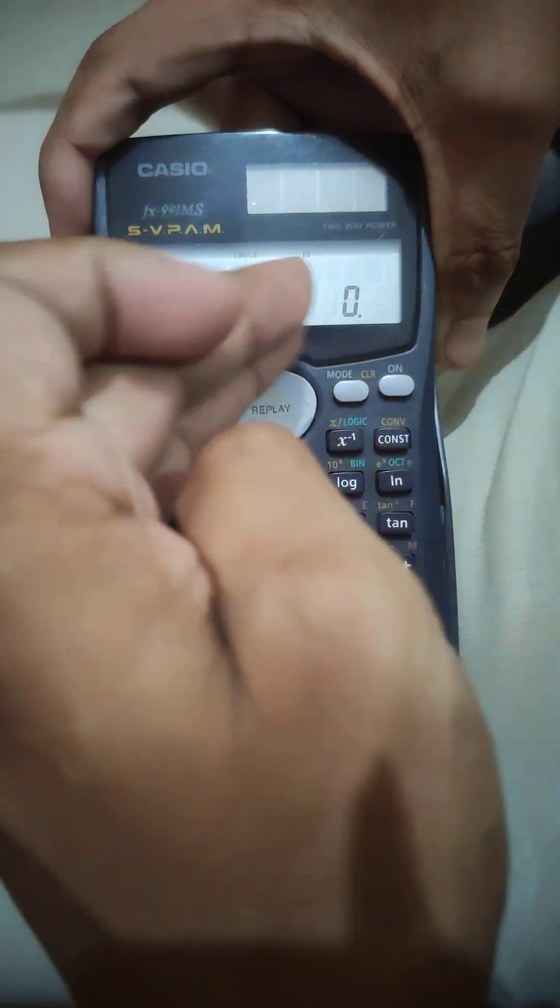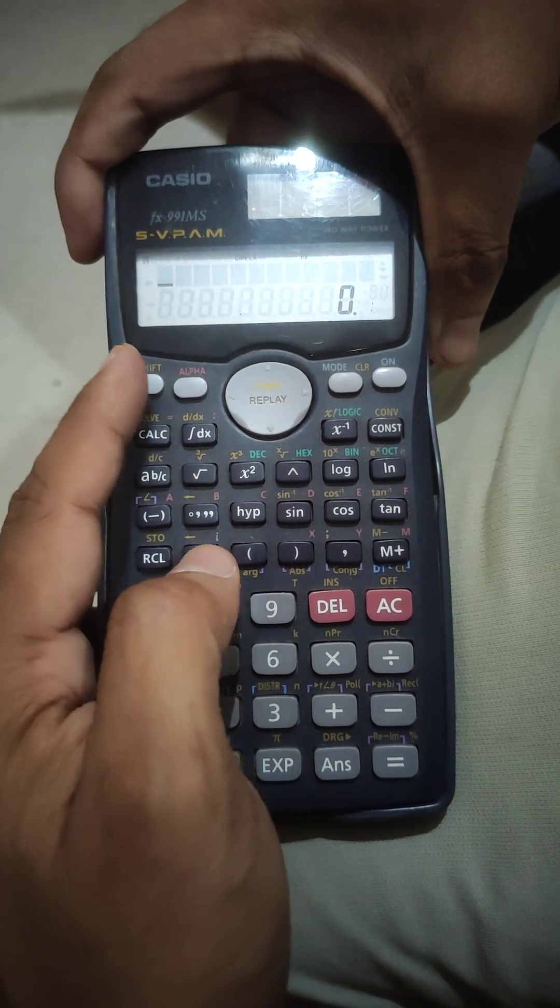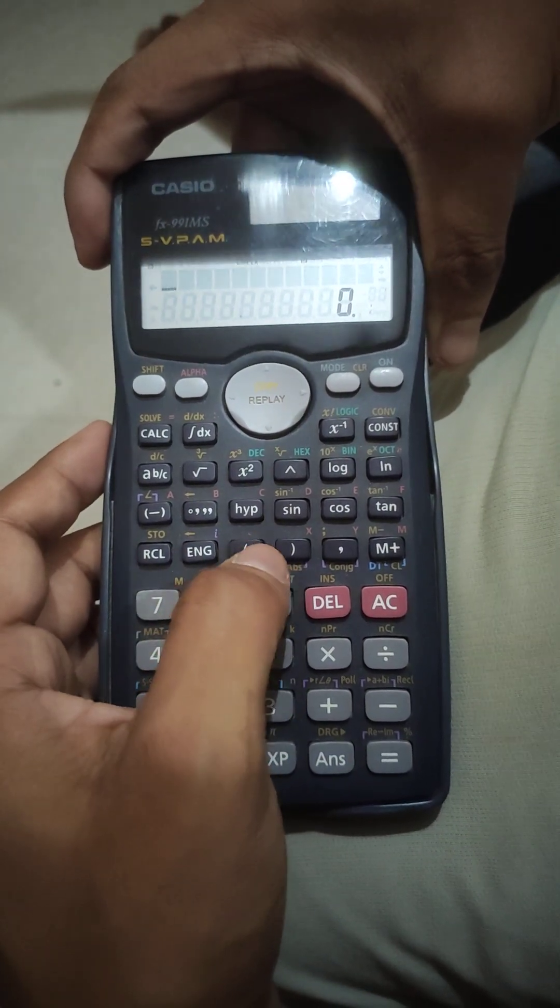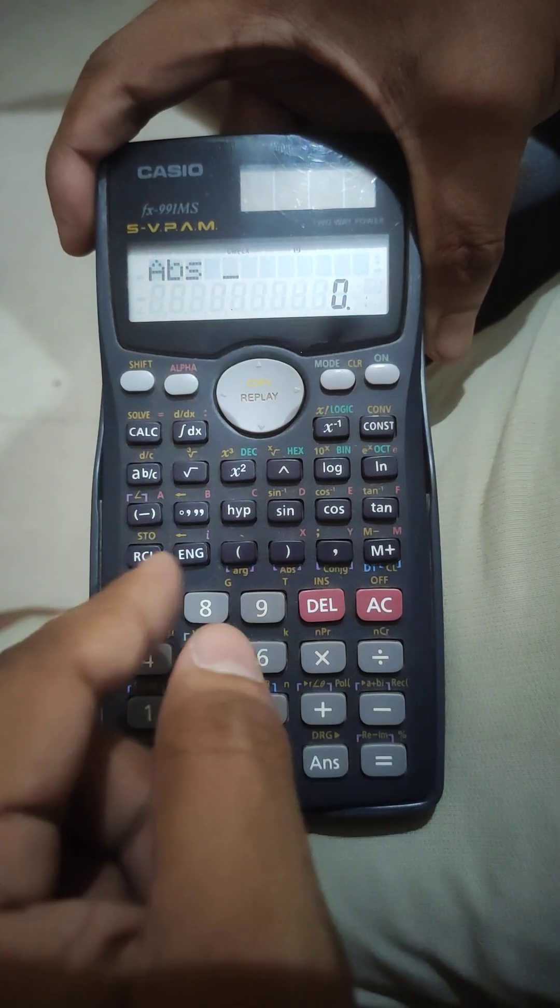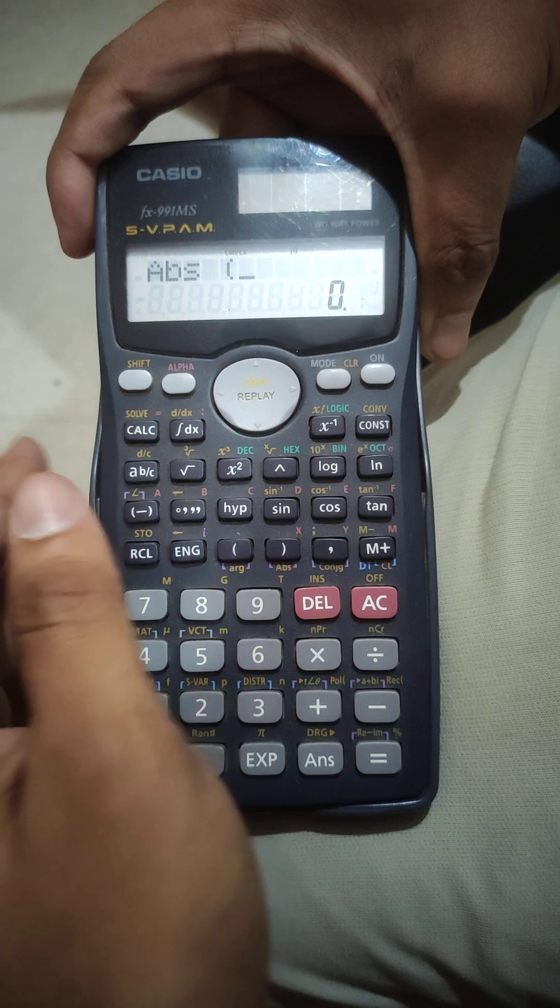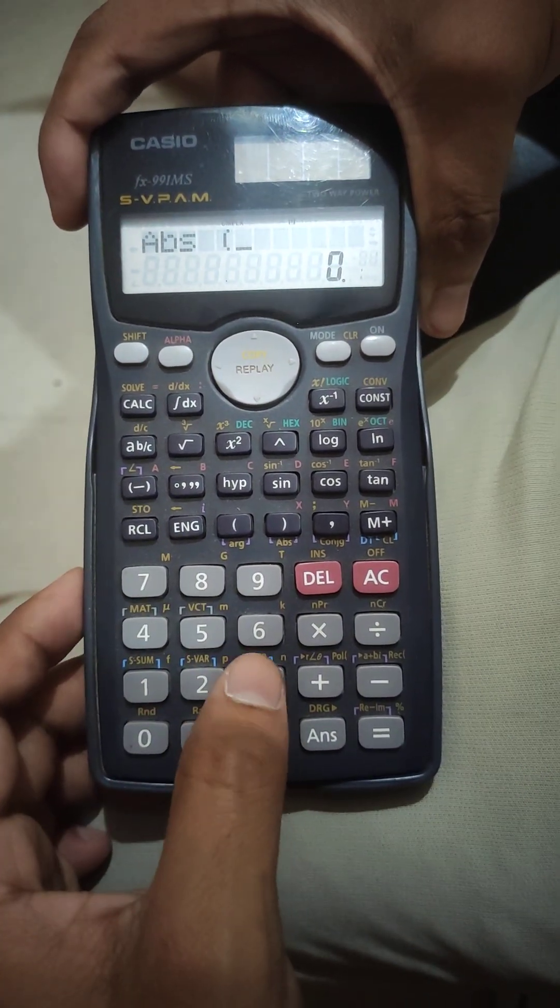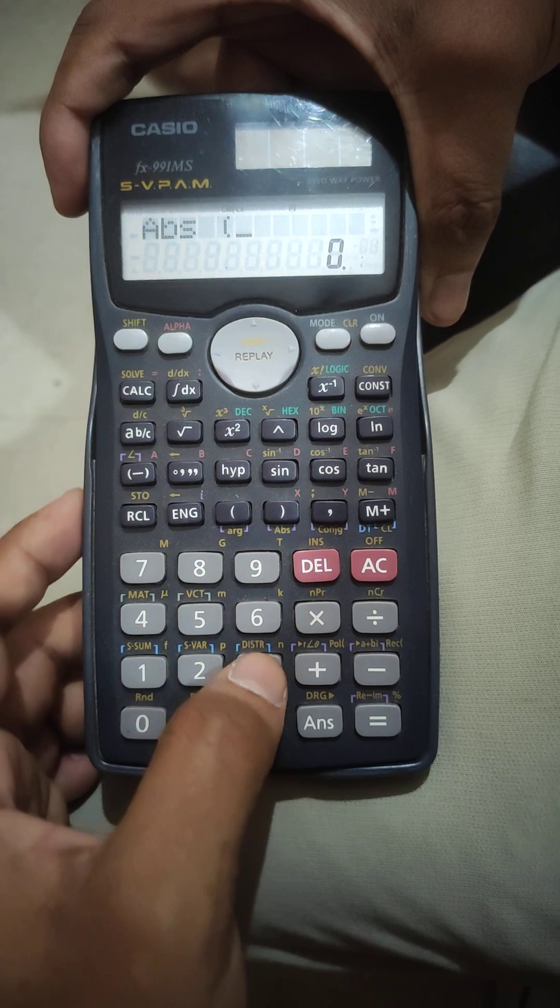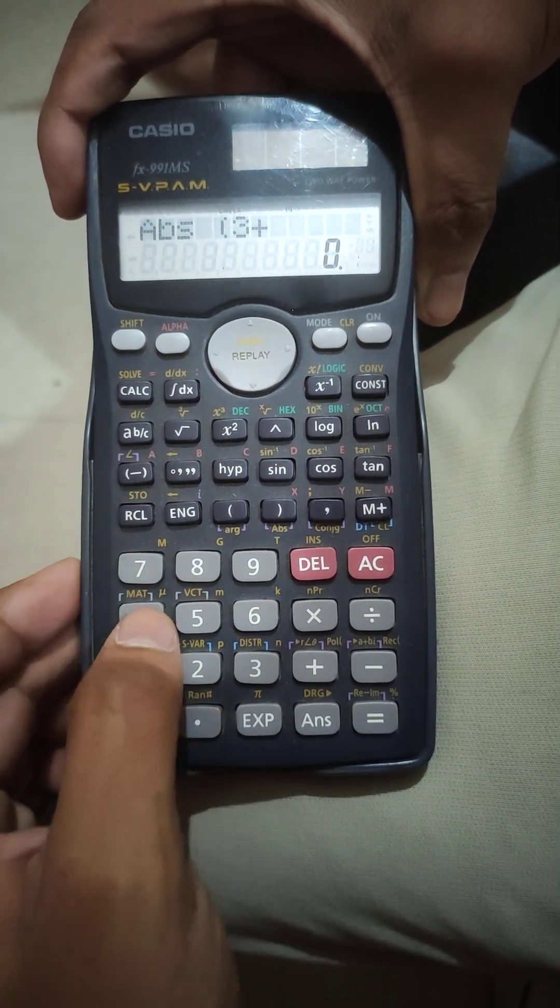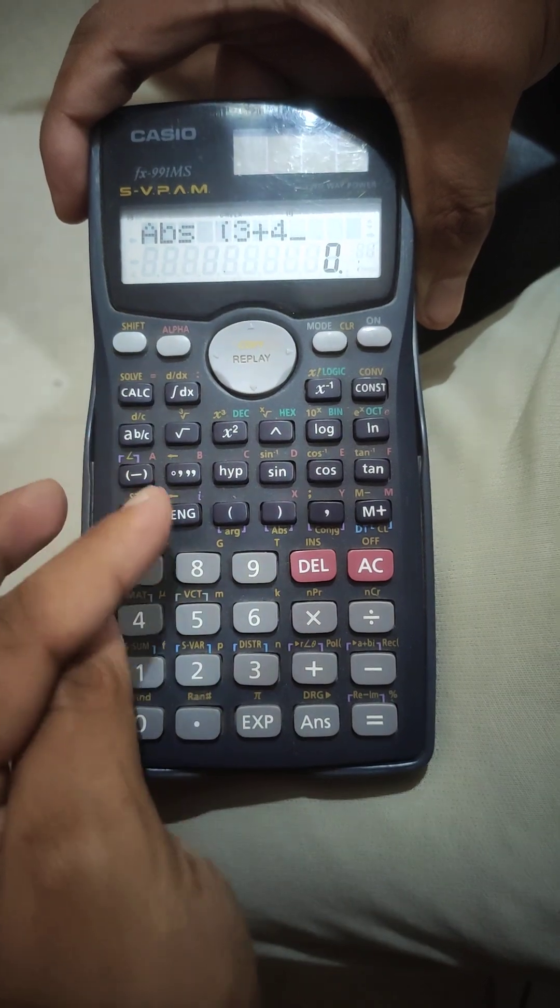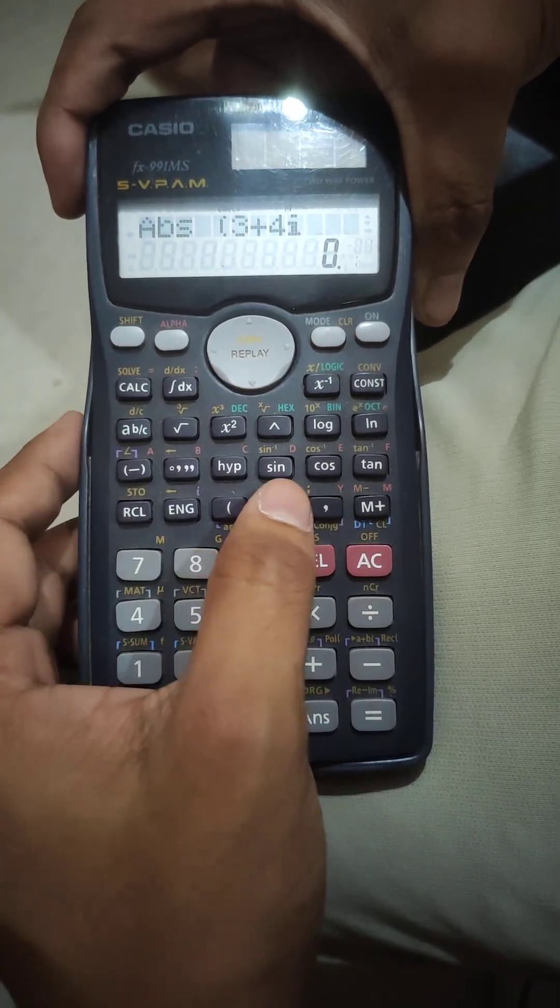Press the absolute button - for this press Shift and then press this parenthesis button. Now we put the parenthesis, another parenthesis, and input the real part. Here the number was 3+4i, so 3 plus 4, and press Shift and then find the iota because the iota is here, and then close the parenthesis.